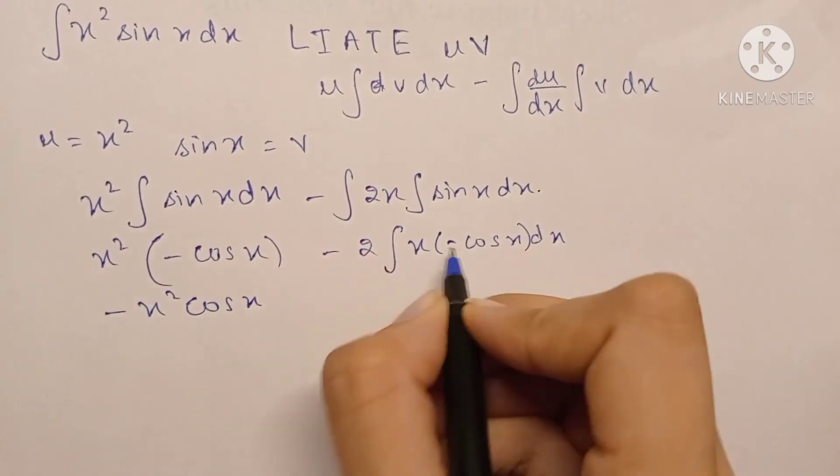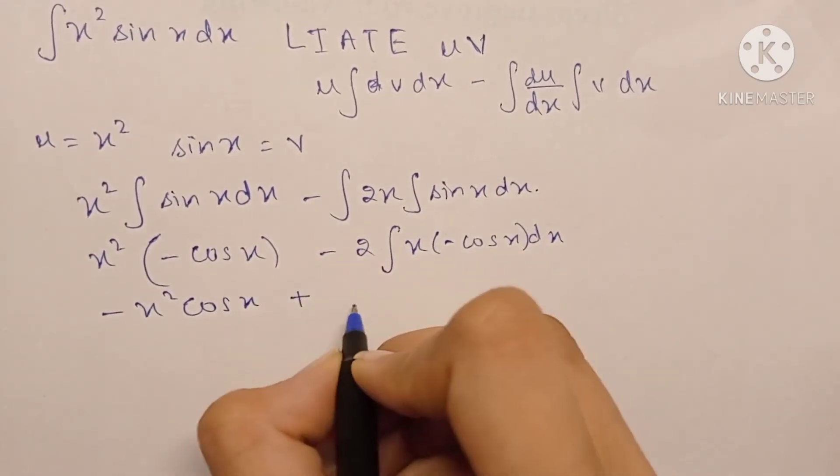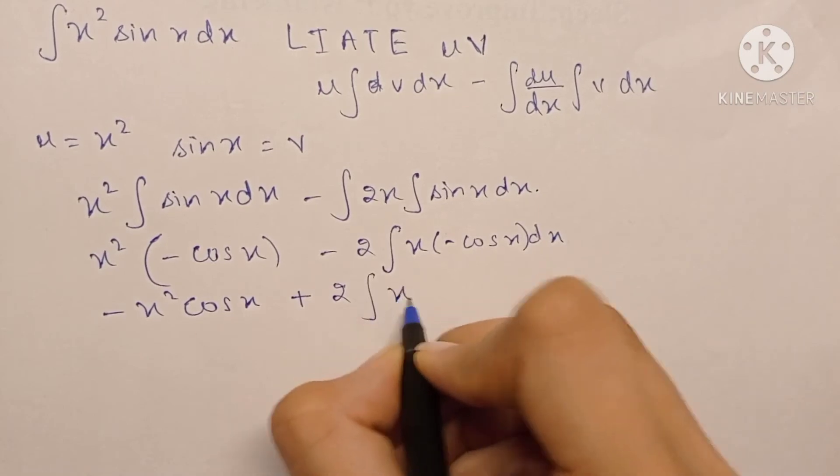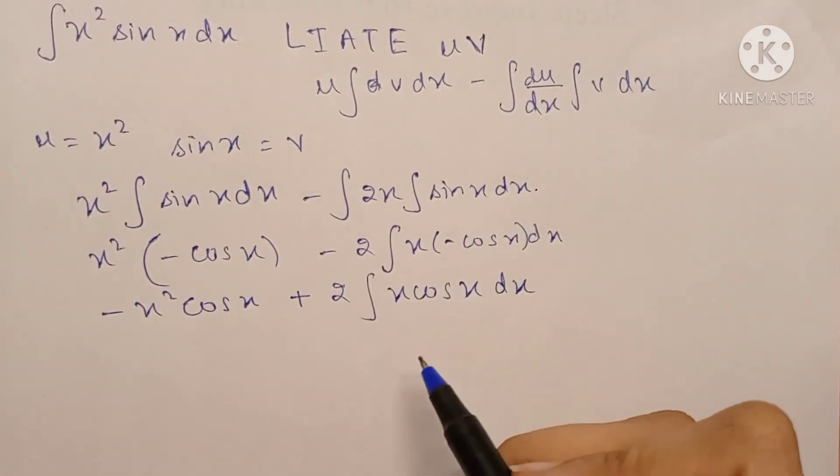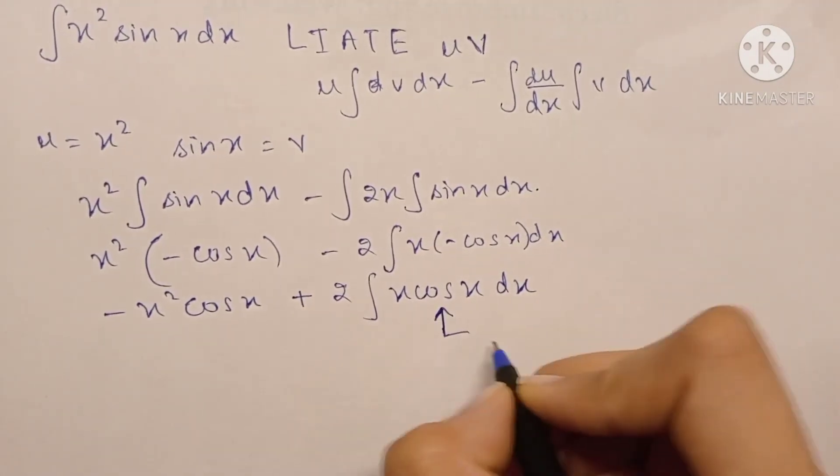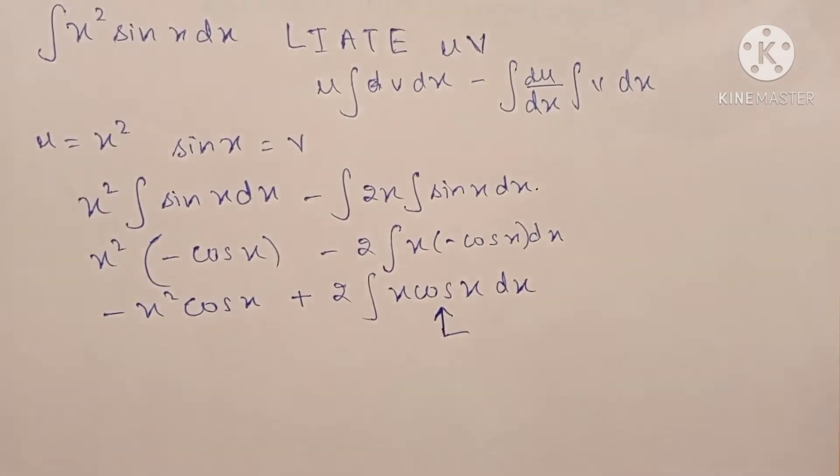Minus can be taken outside, so this turns into a plus sign into 2x cos x dx. For this again we will be integrating by parts. This becomes the v—sorry the u term, sorry I'm so sorry.